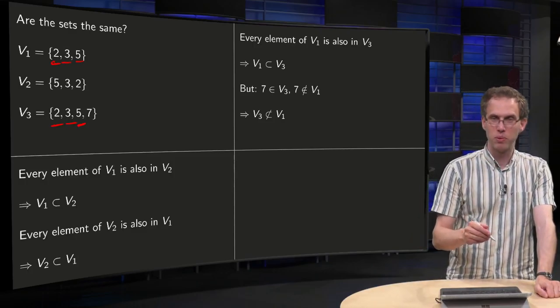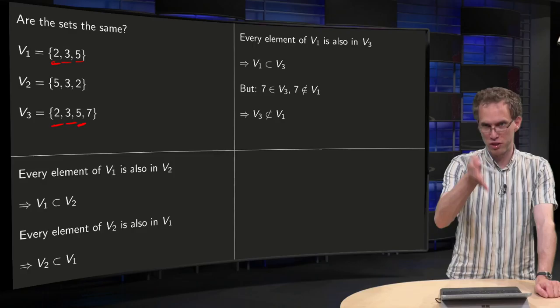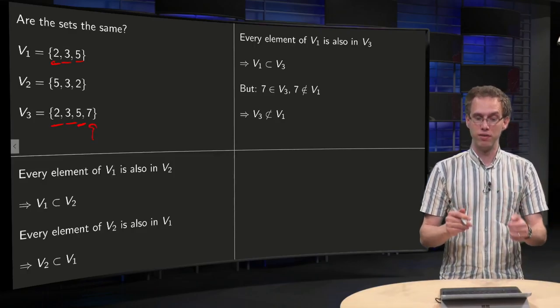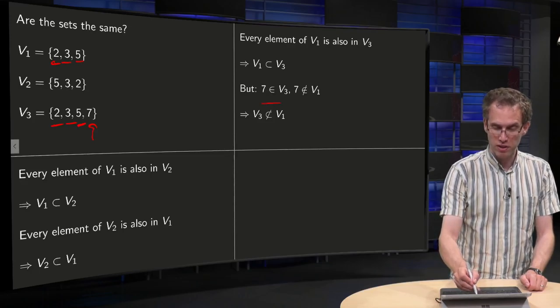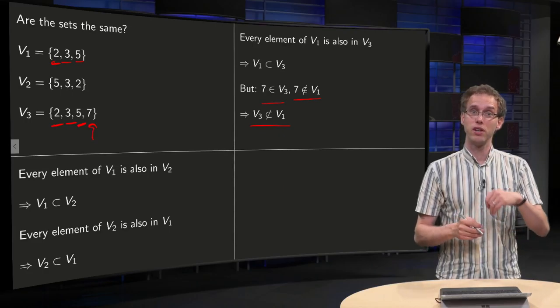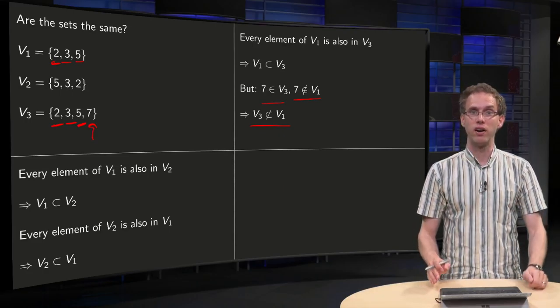Now we look the other way around. Well let's start directly with the 7, you already see of course where it's going wrong. The 7 is not contained in V1, so 7 is in V3 but not in V1, so that means V3 is not a subset of V1, so V1 and V3 are not the same.